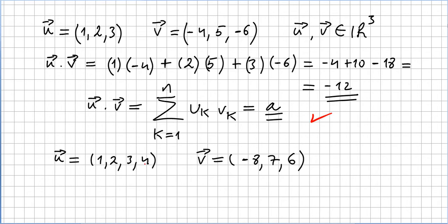Now suppose we have a second exercise where we are asked to do the dot product or the inner product between vector u components 1, 2, 3, 4 and vector v components minus 8, 7, and 6. So let us do the dot product for u times v.